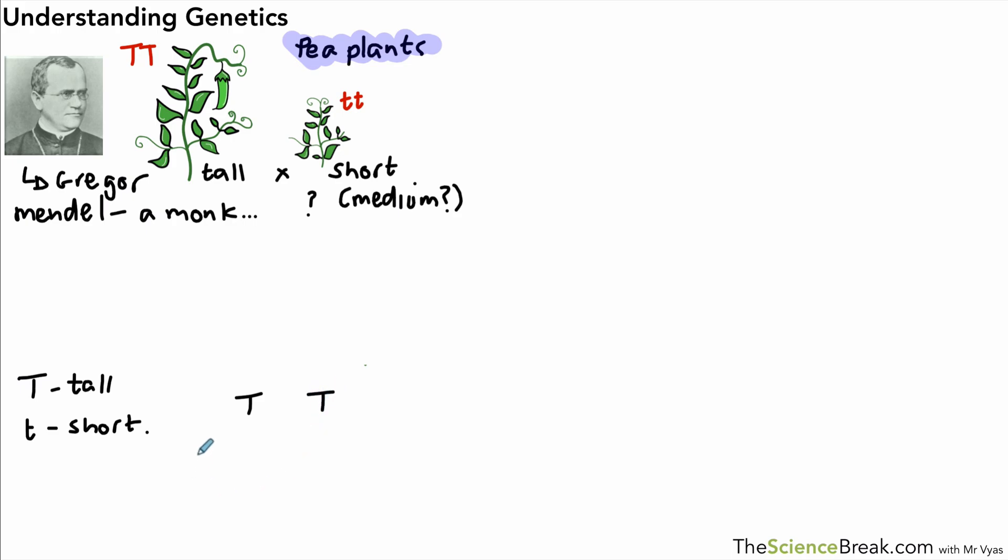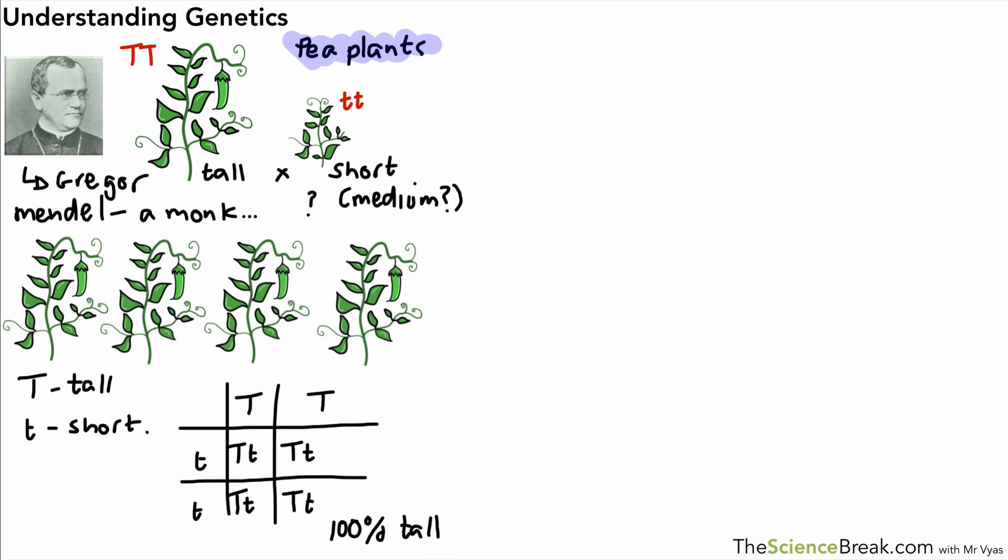Therefore, if we did a cross by looking at the alleles, and this is just a recap of what we've done previously in previous videos, what you would see is that we would have a combination of alleles in the offspring as shown on the screen. We would get 100% tall plants, and actually, as you could see, they would be what we call heterozygous. And there's all our tall pea plants.